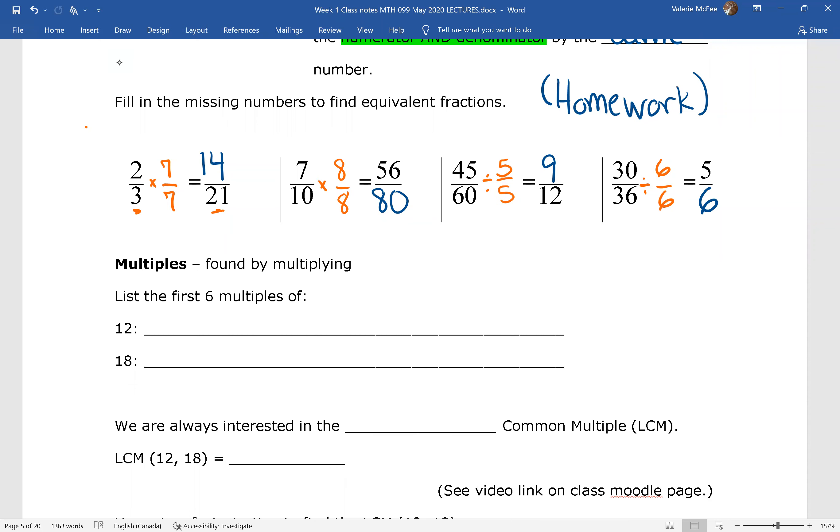The last thing we want to talk about here are multiples. Don't confuse these with factors. Remember that factors divide evenly into a number. Multiples are found by multiplying. So when we find the multiples of 12, we have to multiply 12 times 1, 12 times 2, 12 times 3, times 4, times 5, times 6. Pause your video and list the multiples of 18.